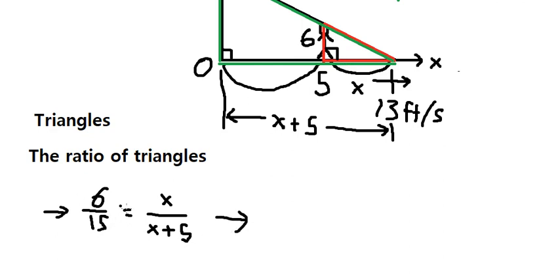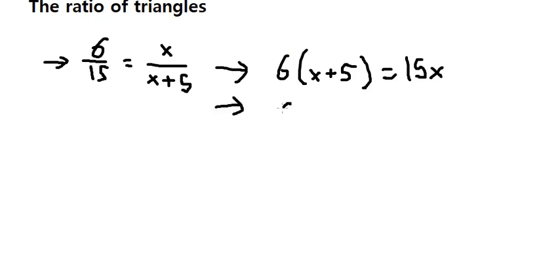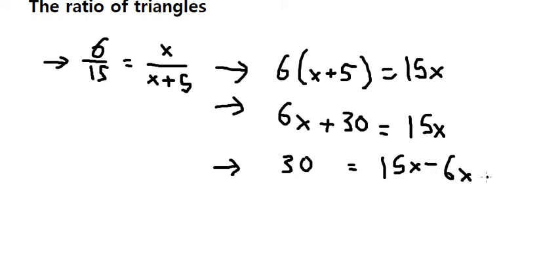Cross-multiplying, we have 6S plus 30 equals 15S. Moving terms to the right, we have 30 equals 15S minus 6S. So we have 30 equals 9S.